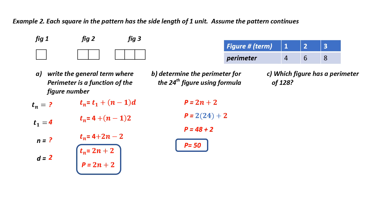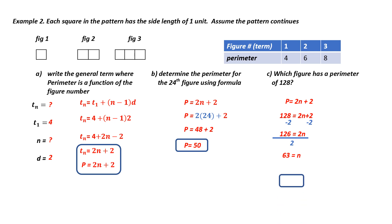Part C: which figure has a perimeter of 128? In this case, I'm told the perimeter and want to find n. I write out my general term and substitute 128 in for p. Working backwards to get n alone: subtracting 2 from both sides gives 126 equals 2n. Dividing both sides by 2 gives 63. Therefore, the 63rd figure has a perimeter of 128.